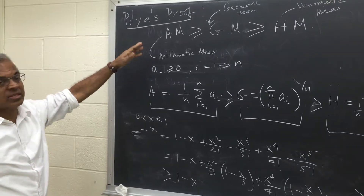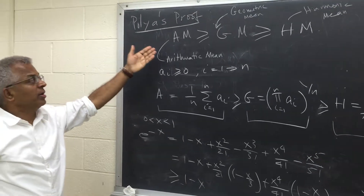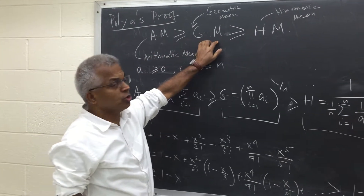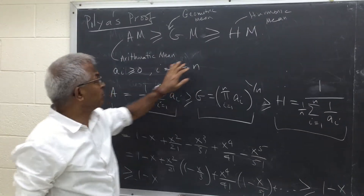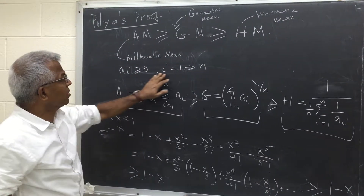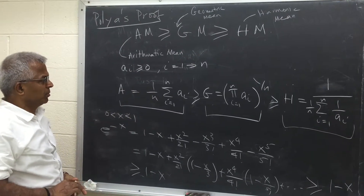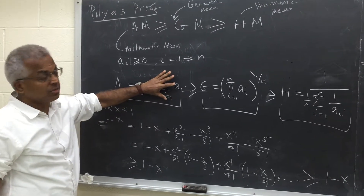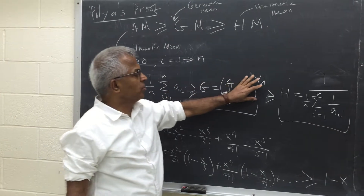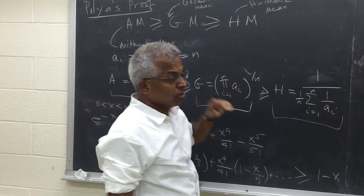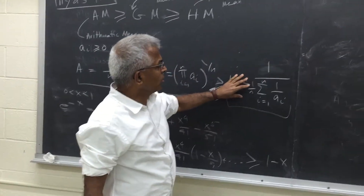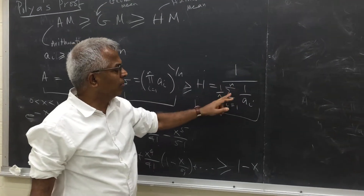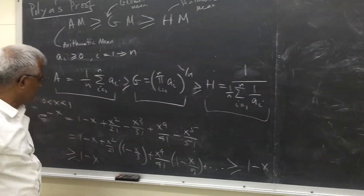I want to prove the standard inequality: arithmetic mean is greater than or equal to geometric mean, which is greater than or equal to harmonic mean, for a bunch of non-negative numbers. The arithmetic mean is the usual average. The geometric mean is the product to the power 1 over n. And the harmonic mean h is 1 over the average of 1 over a_i's.